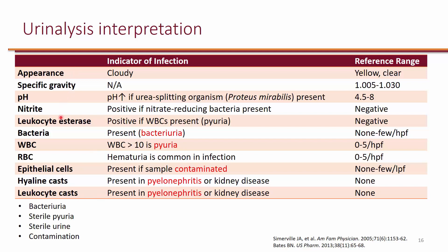Regarding pH — some organisms such as Proteus mirabilis are capable of splitting urea, which will increase the urine pH. Occasionally you will see that the pH is higher than the normal range, and that helps you suspect Proteus mirabilis when choosing antimicrobial agents.